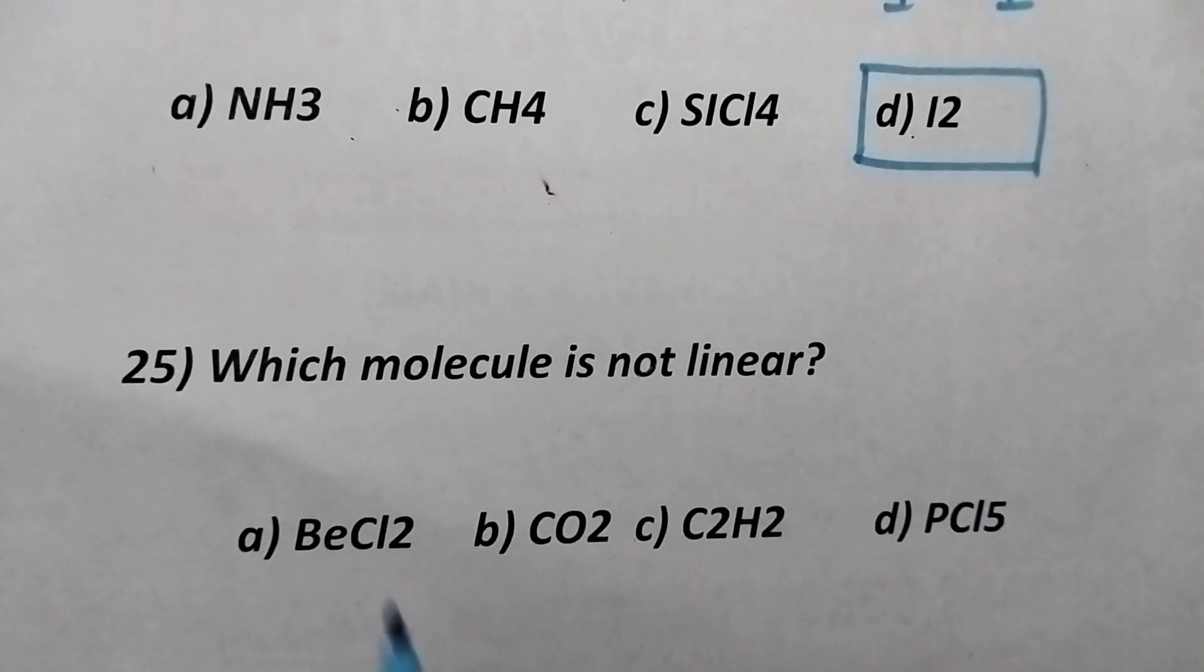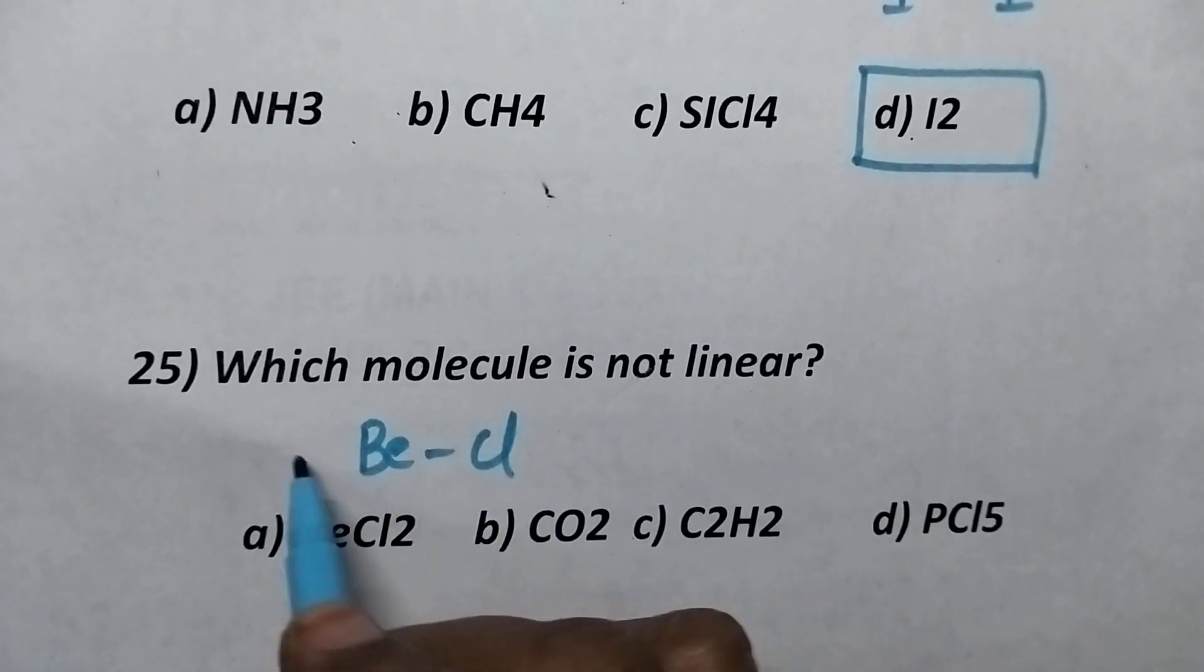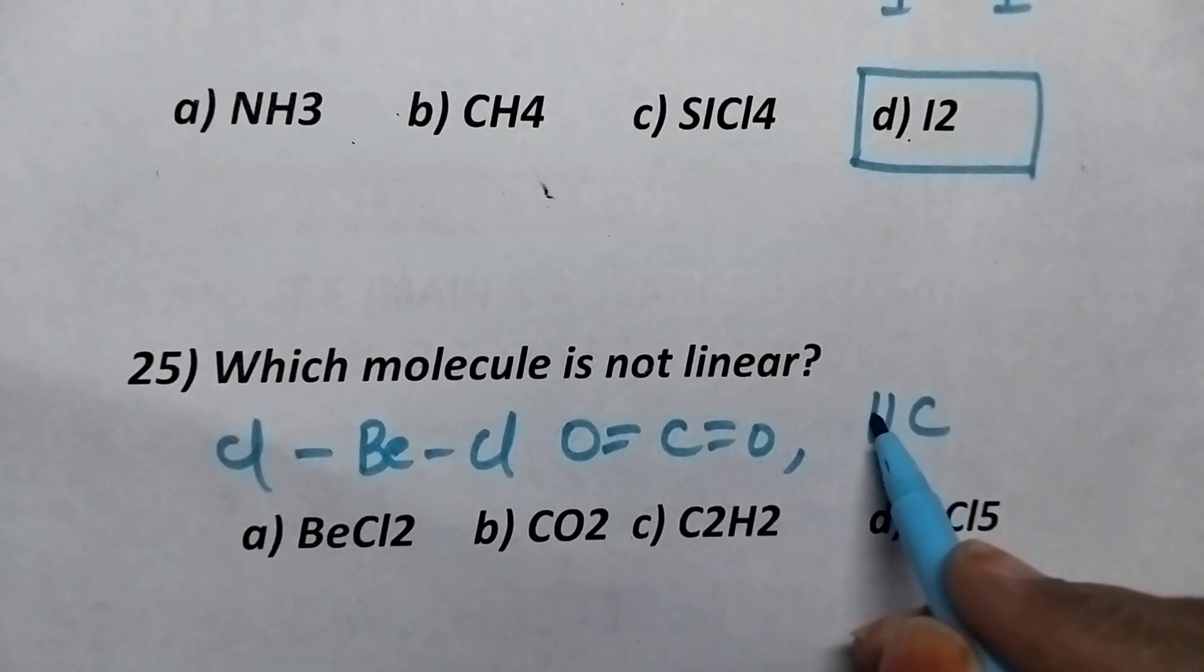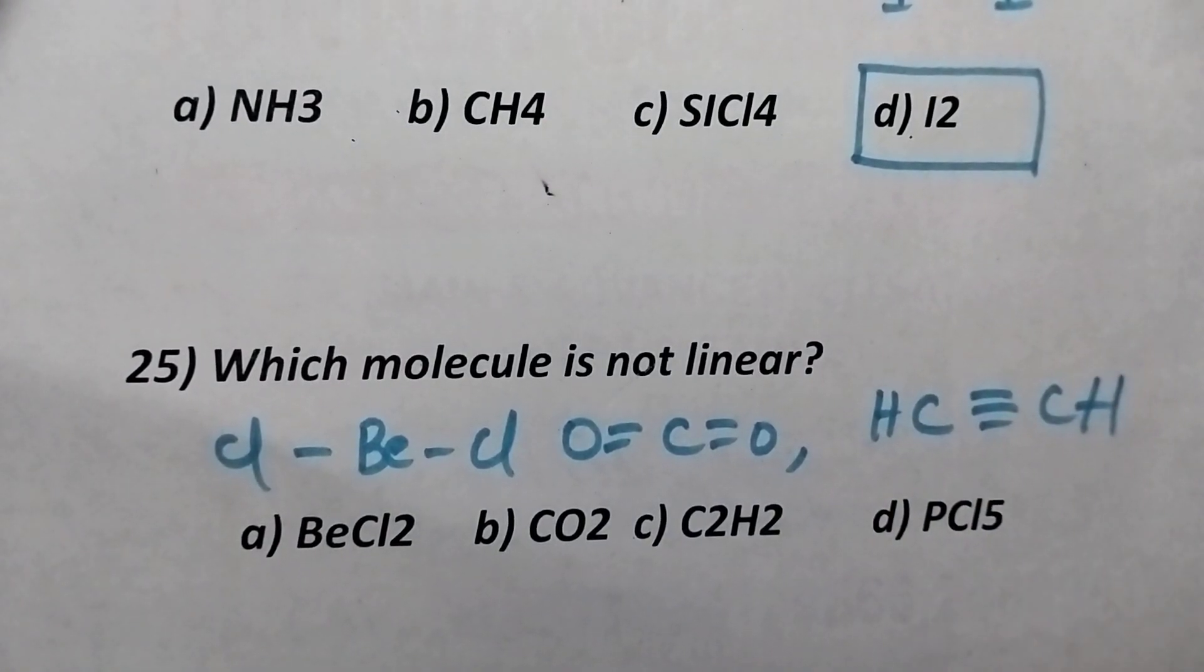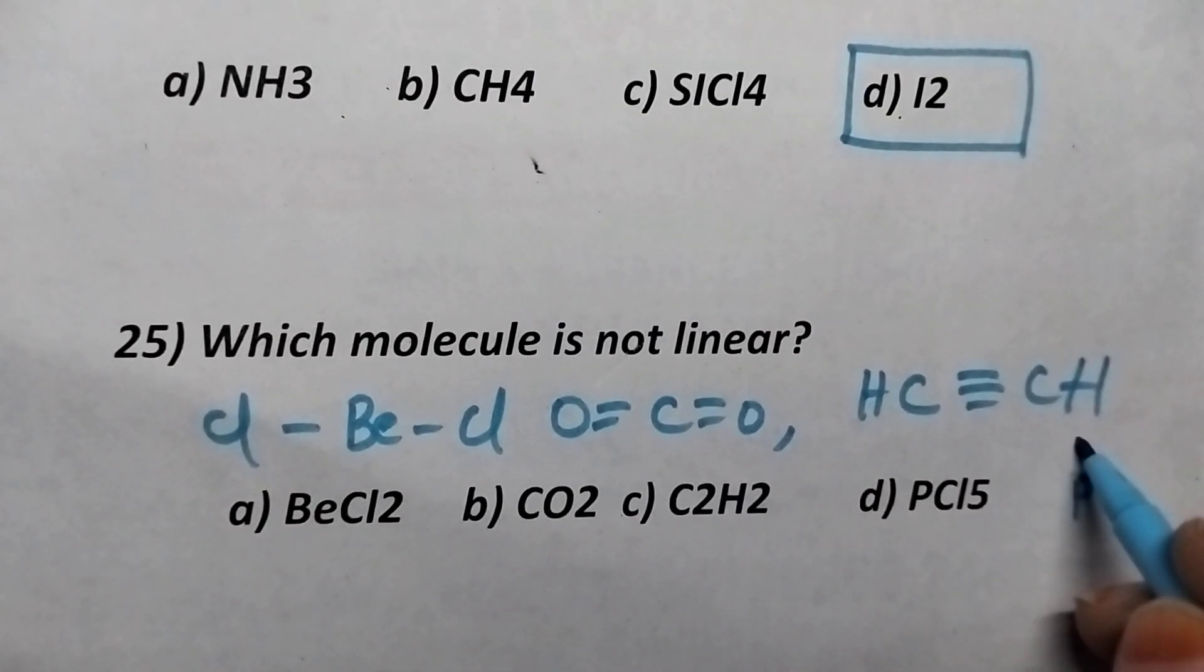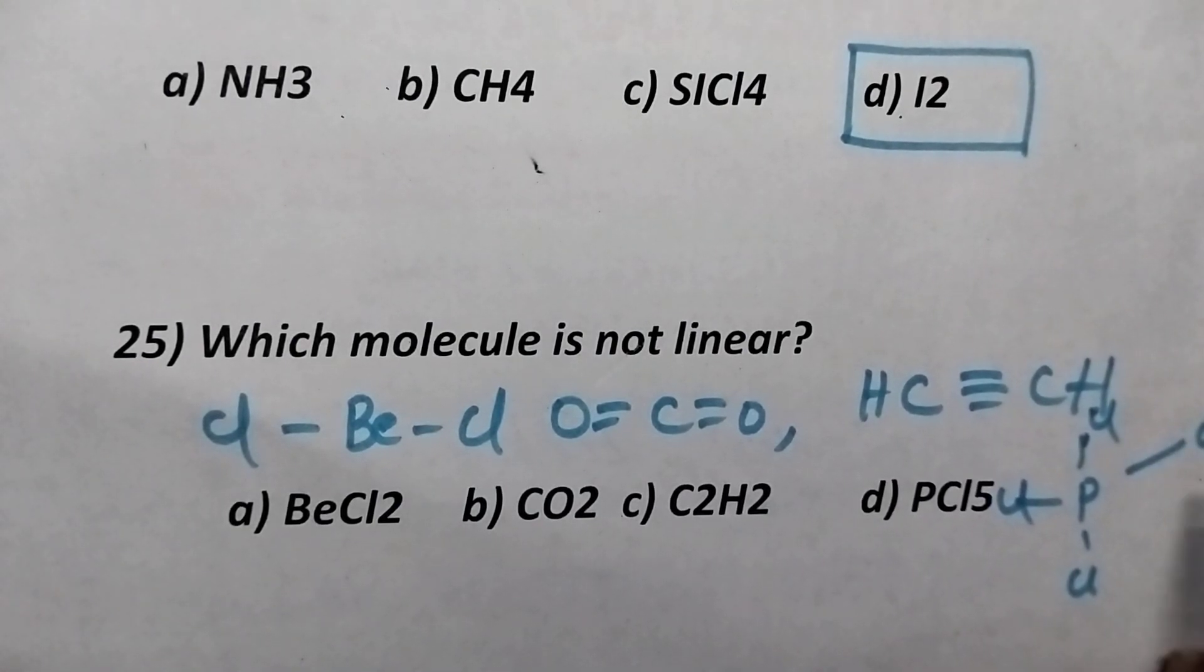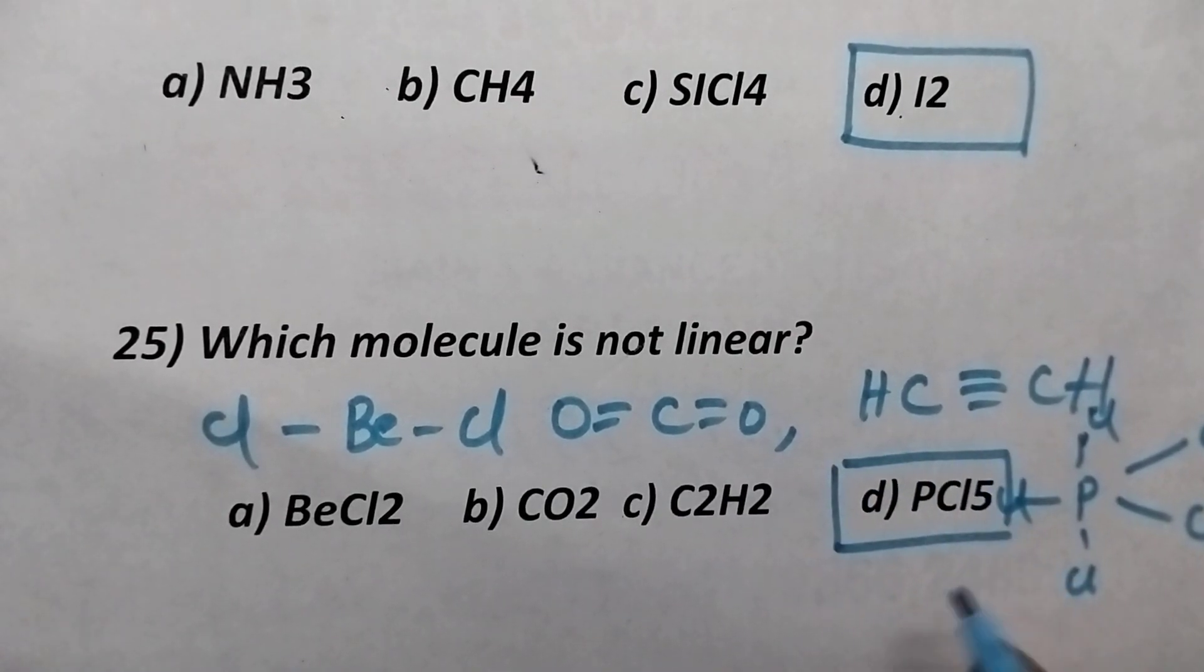Which molecule is not linear? So, BeCl2 is linear, CO2 is linear, C2H2 is also linear. But coming to the PCl5, it is not having the linear structure. So, in this case, PCl5 is the right option.